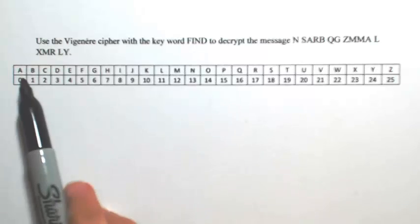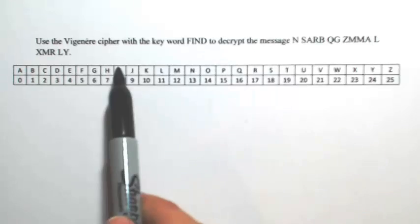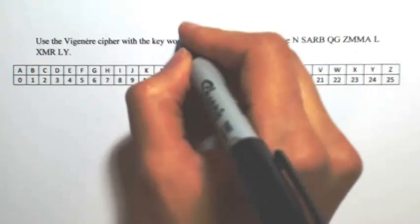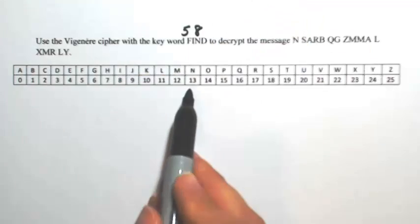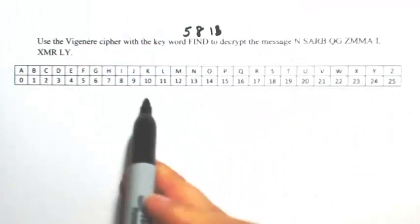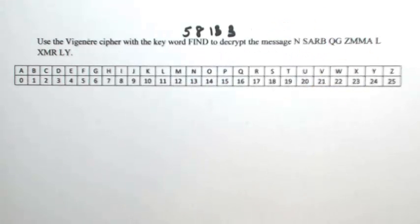So within this list, I'm going to list out what each letter is worth, essentially. So F is 5, I is 8, N is 13, and D is 3. So this is going to tell us what the shifting is.